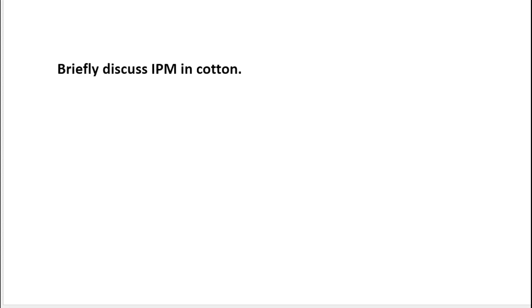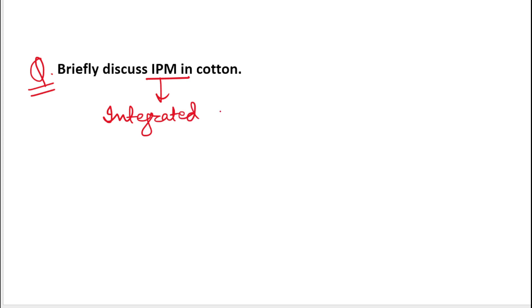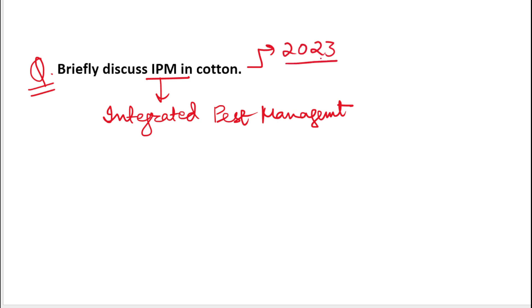Hello everyone, hope you all are doing well. Today we are going to do the next question of our agriculture optional answer writing practice. Today's question is: briefly discuss IPM in cotton — that is, Integrated Pest Management. This question was asked in the 2023 agriculture optional paper of the UPSC Civil Services Examination.